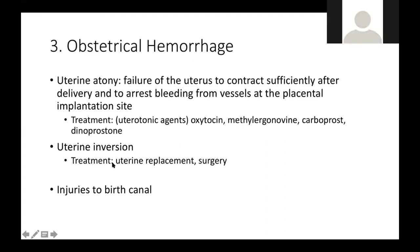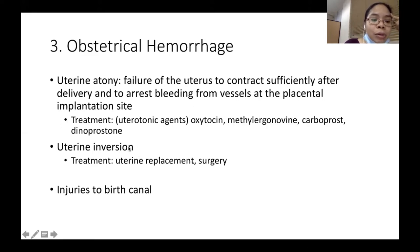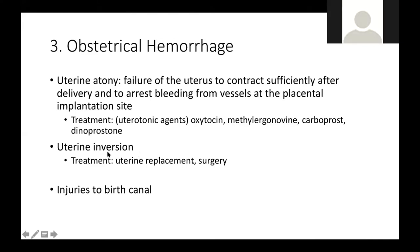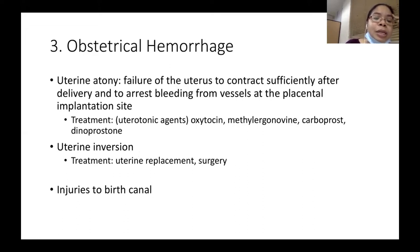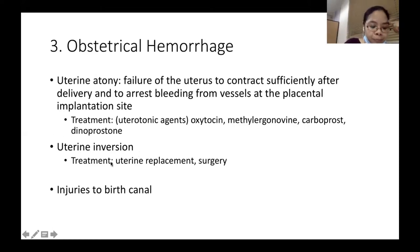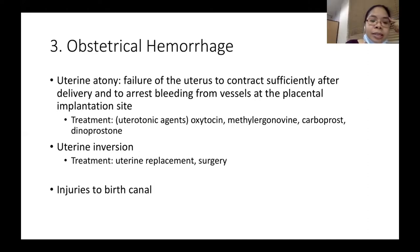The next type is uterine inversion, which happens when you're trying to deliver the placenta and the uterus inverts — usually when you pull on the placenta too vigorously. This causes obstetrical hemorrhage. The treatment is to relax the uterus with general anesthesia or a uterine relaxant, and then replace the uterus back into the pelvis, or perform surgery if needed.